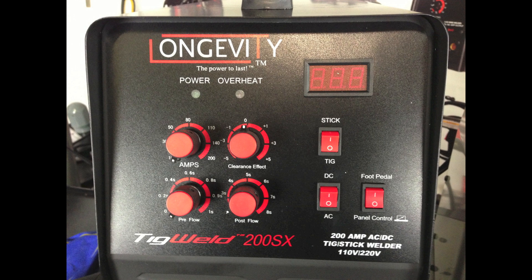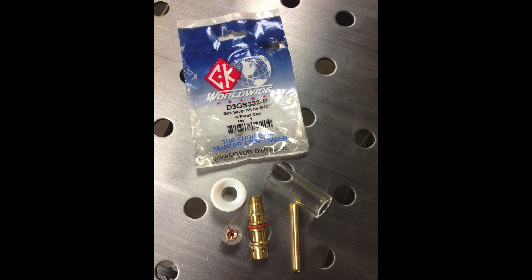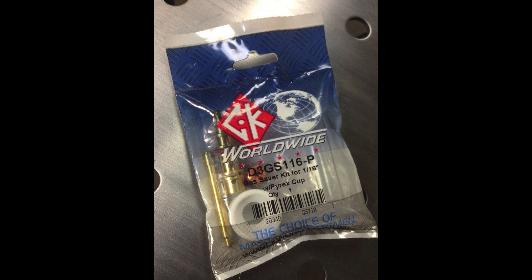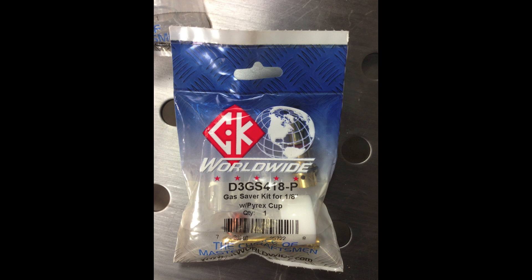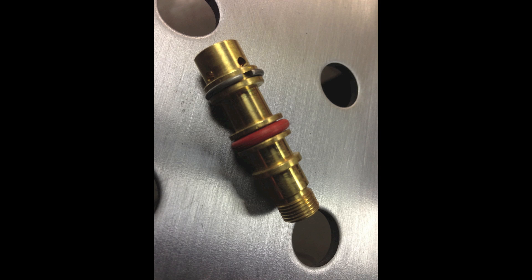Hello, we're going to use the TIGWELD 200SX and convert it over to a CK Worldwide Gas Saver Assembly. It comes in 1/16 size and also in 1/8 size, but today we're setting up the 3/32 size.